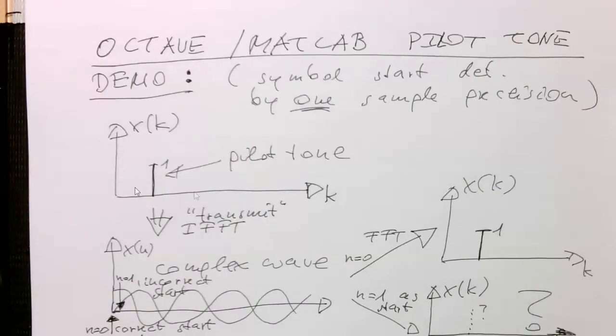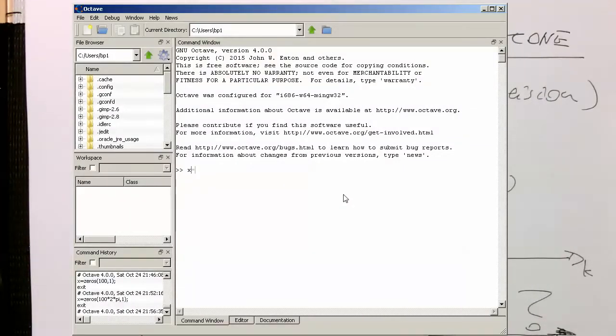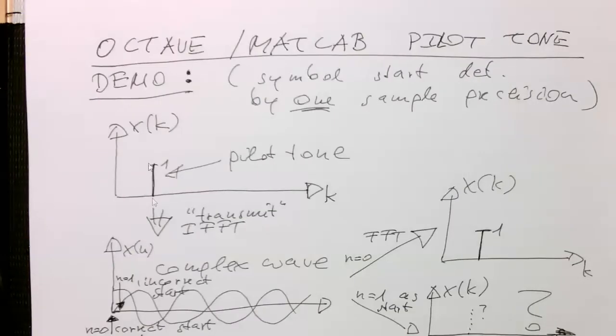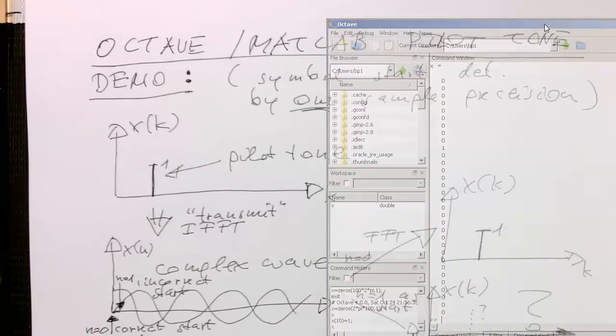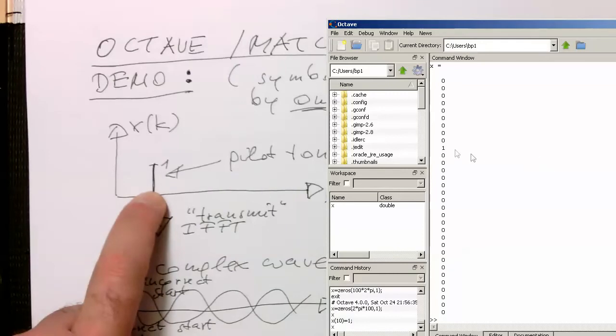So first task is creating this pilot tone here. So I need to create an empty array x of k, and the one somewhere inside. So x equals zeros, and I do this multiples of two pi. Let's say 100, 100 of that. So this gives us a long empty array. And then we say x of 10, we set this to one. And again, let's check that. So we are getting a one there in this array here. So at this point here, we have created here this pilot tone here. So that one here is that, that one here.